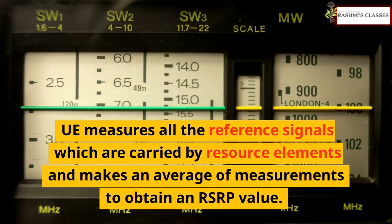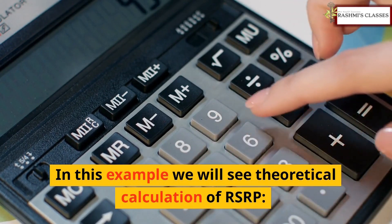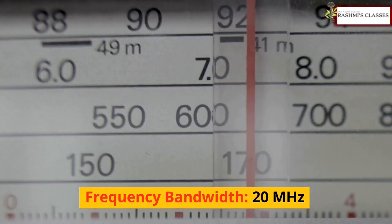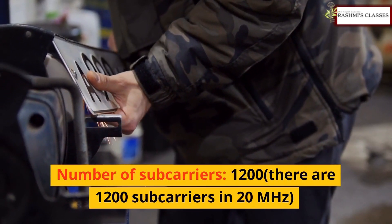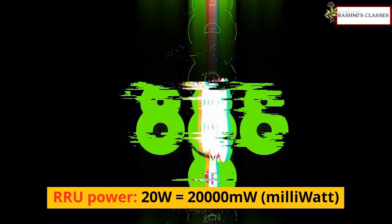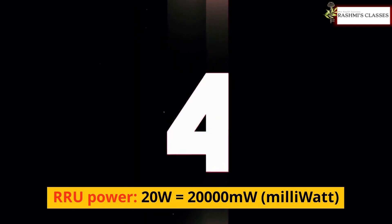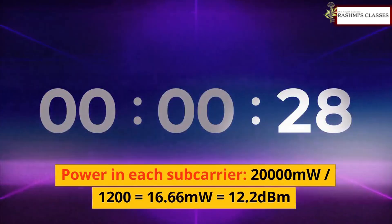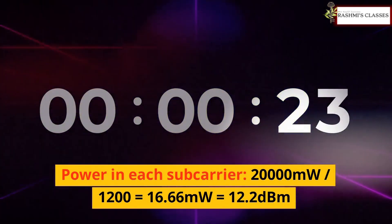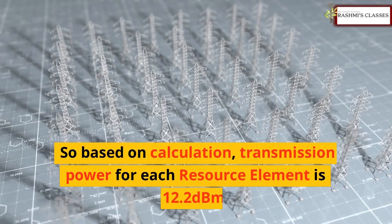To obtain an RSRP value, let's see a theoretical calculation. Frequency bandwidth: 20 MHz. Number of subcarriers: 1200 — there are 1200 subcarriers in 20 MHz. RRU power: 20 W equals 20,000 milliwatts. Milliwatt power in each subcarrier: 20,000 / 1200 = 16.66 milliwatts, which equals 12.2 dBm.